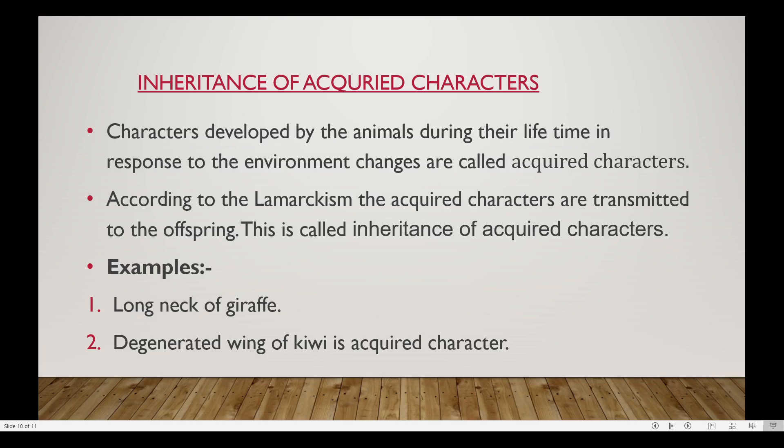The long neck and forelimbs of the giraffe are large, and after reproduction, the long neck and forelimbs are inherited by the offspring. For the kiwi bird, the wings are degenerate because they are not used. If wings are not used, they degenerate and eventually disappear completely.